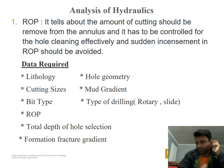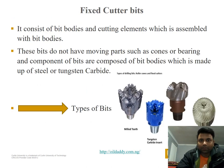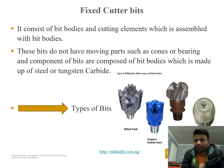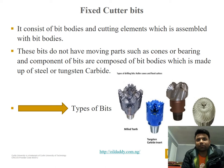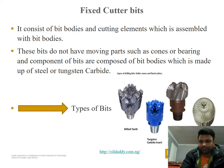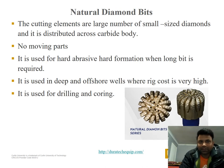Fixed cutter bits consist of cutting elements assembled with bit bodies. These bits do not have moving parts such as cones or bearings. The components of the bit are composed of a bit body made of steel or tungsten carbide.